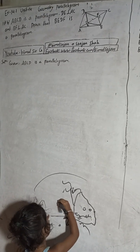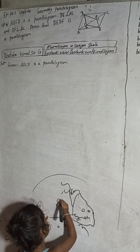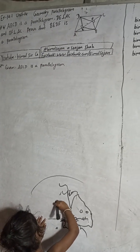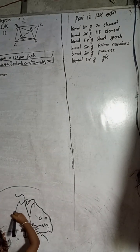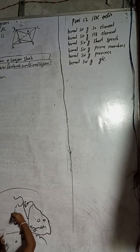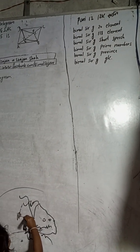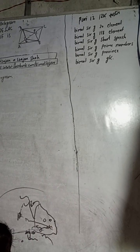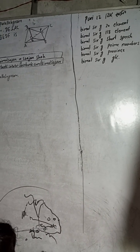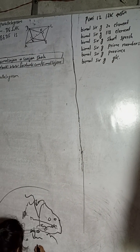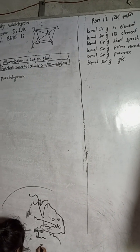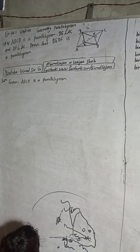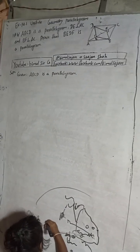Check my video description — in the description I have given details of who have shared. The highlights of my channel include: Bhimalsarji 20 element, Bhimalsarji 180 element, Bhimalsarji short speech, Bhimalsarji prime number, Bhimalsarji province, Bhimalsarji GK, Bhimalsarji crisscross method, and many more. Watch those videos and if you like them, give feedback and comments.